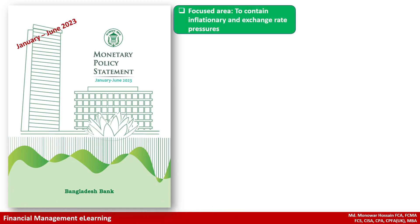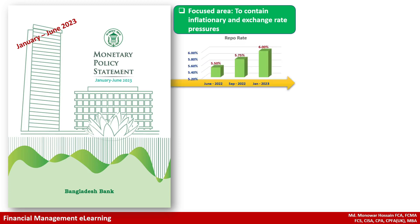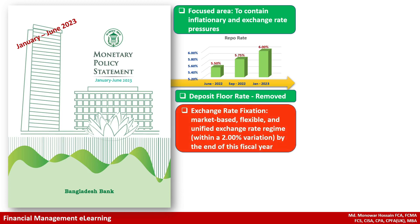This policy statement for January-June 2023 focused on containing inflationary and exchange rate pressure. The repo rate for January 2023 is 6 percent; in September 2022 it was 5.75 percent. The deposit floor rate was removed. Bangladesh Bank is moving toward a flexible and unified exchange rate regime within a 2 percent variation.